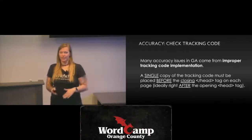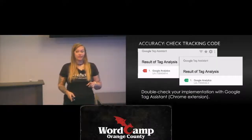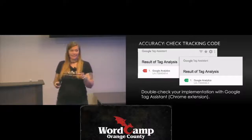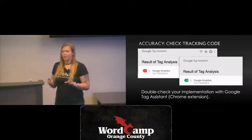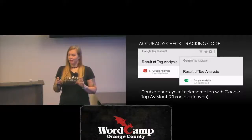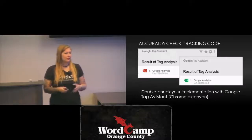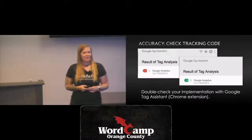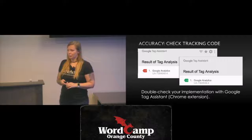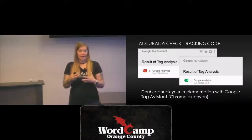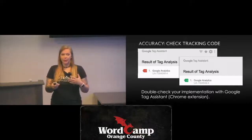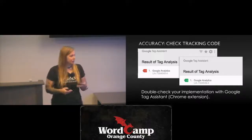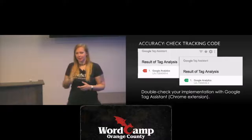A quicker, easier way of checking this is Tag Assistant, which is a Chrome extension. You can install it and it will give you a green smiley face if it's implemented correctly, or a red sad face if it's not. It actually checks that the data is able to be sent — not just that the code is in the right place — so if you have a missing character or some error in your code, this would tell you that as well.